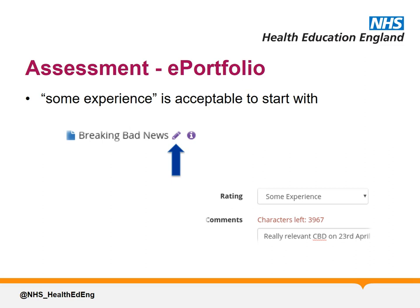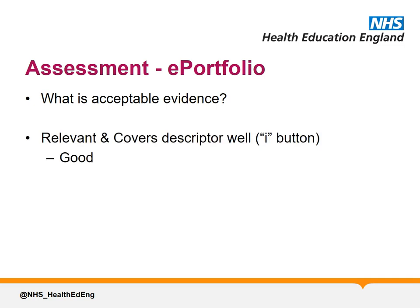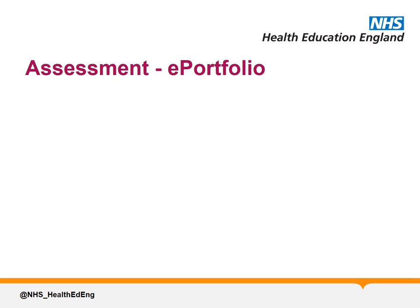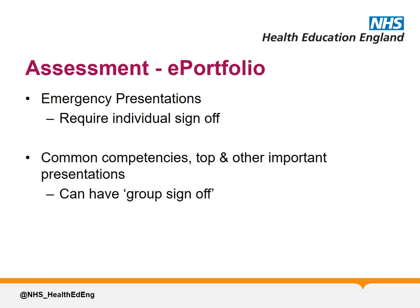Trainees often ask what is acceptable evidence for sign off for a curriculum item. This is hard to answer, but if both highly relevant and covering the item descriptor well, it's possible to just have one assessment and one reflection for an item. We certainly discourage you from linking things when the connection is tenuous, as at your ARCP your linkages are sampled and this wouldn't demonstrate that you've achieved the curriculum objective. All curriculum items can be signed off as individual items and the emergency presentations require individual sign off, but for both common competencies, top and other important presentations, group sign off is acceptable.